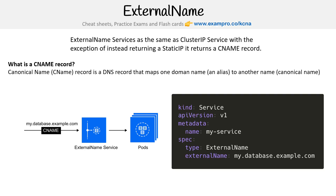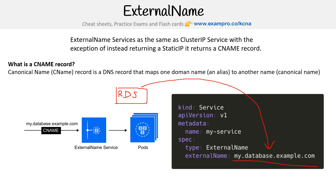So here I'm showing pods — maybe it would make more sense if the arrows went this way — but the point is it's used for routing things to external services. Imagine you have RDS: you cannot assign an IP address to it, it has a fancy DNS hostname. So you would put the RDS hostname here, and when the pod in your application code hits this address, it would go to the external service, and that's how it would know where to go.